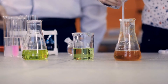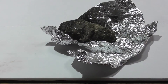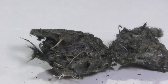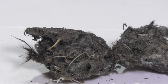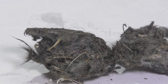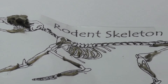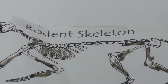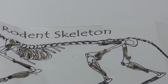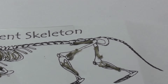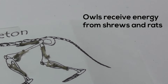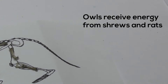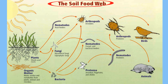Sometimes in science class you may dissect this pellet to see what the diet of the owl consists of. You will find the bones of the animals that the owl has consumed, and this tells you how an owl receives energy. A food web is a diagram that shows the transfer of energy in an ecosystem.